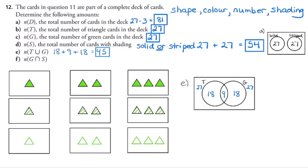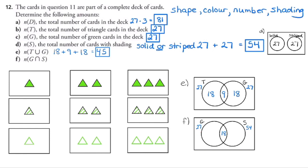The last question asks for the number of cards that are green and shaded. We have 27 green cards and 54 shaded cards. One third of the shaded cards are green — 54 divided by 3 is 18. So 18 shaded cards are green, 18 are blue, and 18 are red. Alternatively, of the 27 green cards, one third (9) are clear and two thirds (18) have either stripes or solid. Both approaches give 18 green and shaded cards. A Venn diagram helps organize this information.